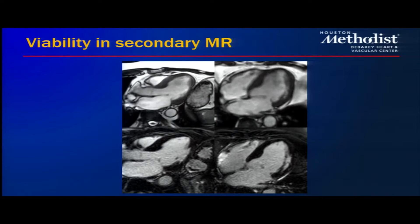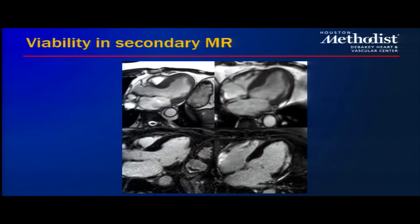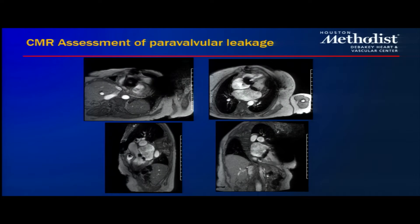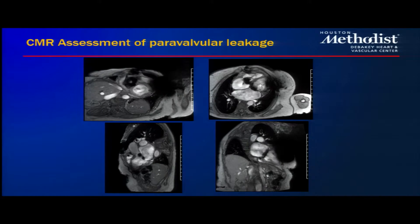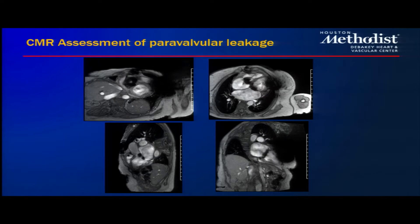For secondary MR and viability assessment, CMR can clearly show wall thinning and confirm the extent of replacement fibrosis or myocardial infarction in that region. We can also examine other mechanisms of mitral regurgitation — shown here is a case with multiple valvular lesions where there is a notable finding opposite the LVOT.